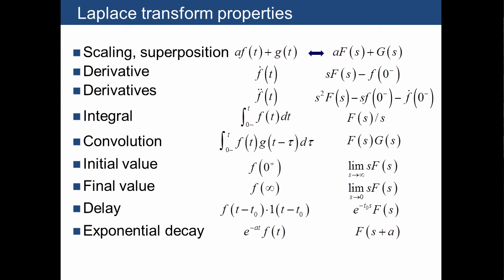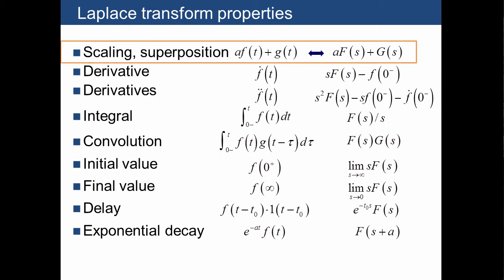Here's a typical Laplace transform table. The properties are shown in the left column, the functions in time are shown in the middle, and the right column shows the corresponding Laplace transforms of those functions. We're only going to look at a few cases here, starting with scaling and superposition.